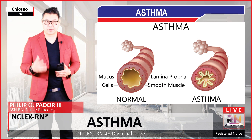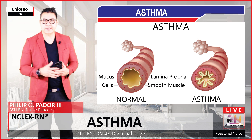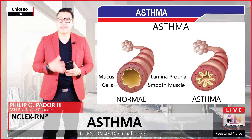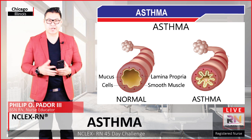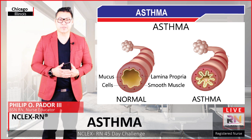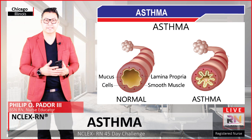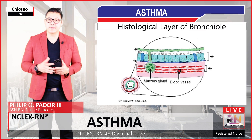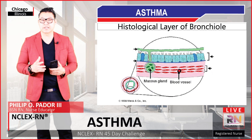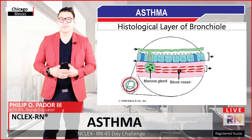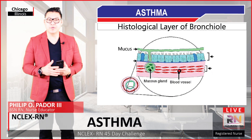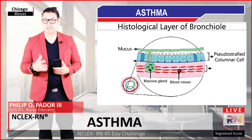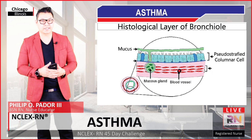So that was the normal bronchus. If we were to look at an asthmatic bronchial, the lumen — the inside — is much narrower. But before we focus on the asthmatic bronchial, let us look at the normal histological layers of the bronchial. Here we have the mucus, and on this layer we have the pseudostratified columnar epithelial cells.